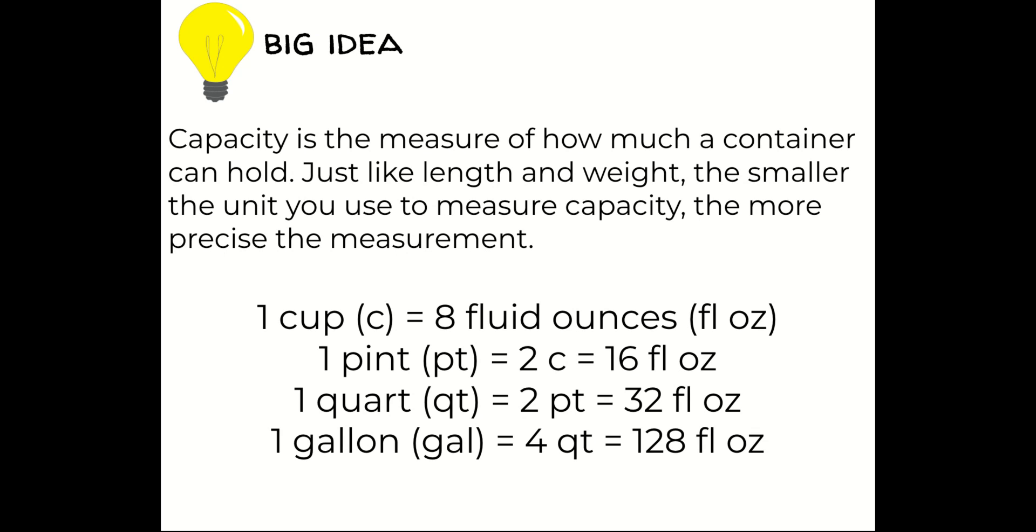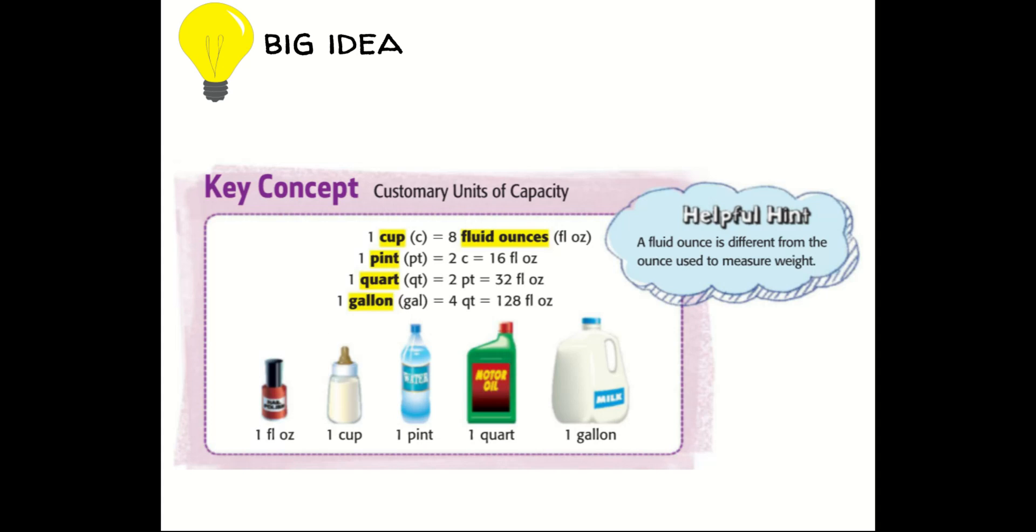One quart is equal to two pints, which is equal to 32 fluid ounces, and one gallon is equal to four quarts, which is equal to 128 fluid ounces. Here's a visual to represent what each of these measurements look like. It's important to remember that a fluid ounce is different from the ounce used to measure weight.